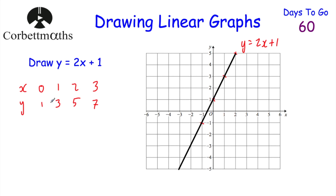There is another way to draw this graph. When we look at the equation of a straight line, we'll see that the plus 1 is the y-intercept — so we plot the point 1 on the y-axis. Then the gradient is 2: go across 1 unit, up 2. Repeat that to get more points and draw the line. You can draw it either way; the xy table method works well.